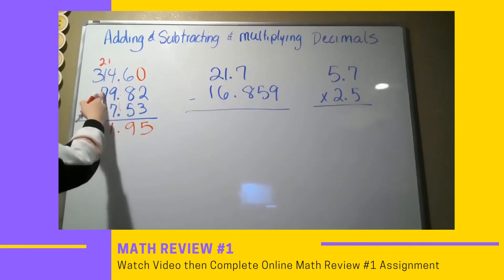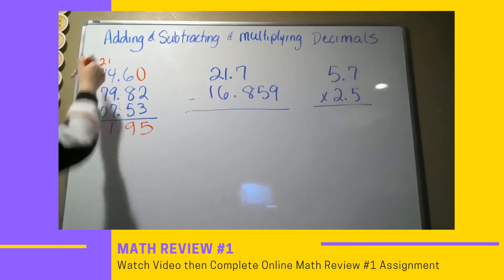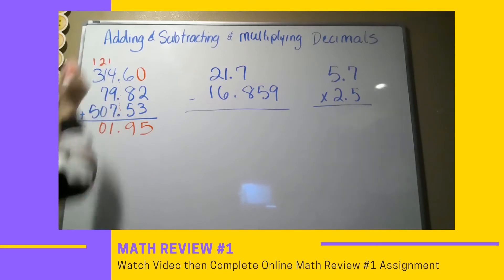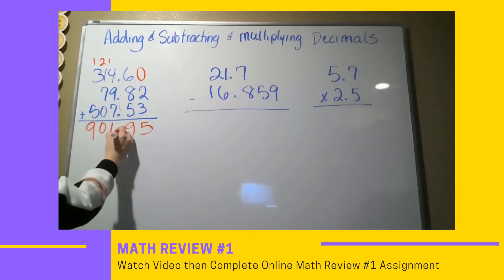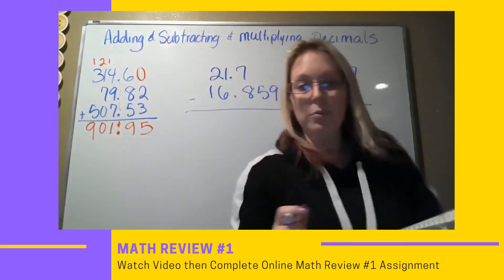7 plus 2 is 9, 10, 11. Then 7 plus 1 is 8, 9, 10. Put my 0, carry my 1, and then I have a 9. Don't forget to bring this decimal down and make sure that you have it right there in your problem.